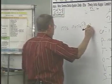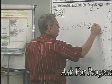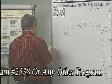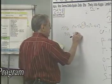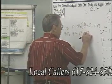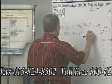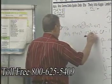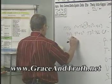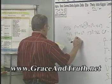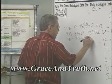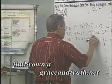You take 903, and you've got 9 to the third power plus 0 to the third power — of course that's 0 — plus 3 to the third power, and you end up with 756. Then you have 7 to the third power plus 5 to the third power plus 6 to the third power, and that gives you 684.